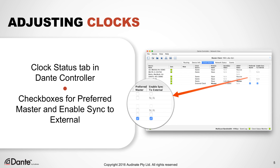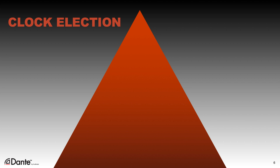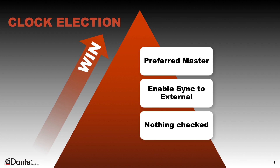Making these adjustments in Dante Controller is easy. Simply open the Clock Status tab to see your present clocking setup and make changes using the Preferred Master and Enable Sync to External checkboxes. We'll see how these adjustments affect the outcome of Dante clock elections. By default, Dante elects a clock without any intervention — this is recommended for most systems.